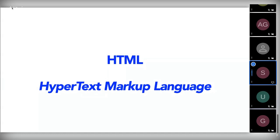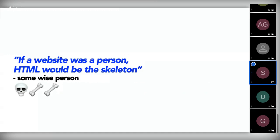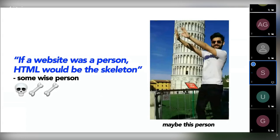HTML, or Hypertext Markup Language, is the most basic building block of the web. It defines the meaning and structure of web content. CSS describes a web page's appearance, and JavaScript handles its functionality and behavior. As a wise person once said: if a website were a person, HTML would be the skeleton.